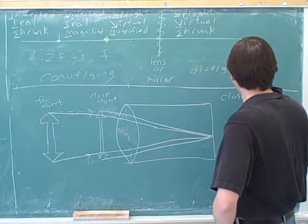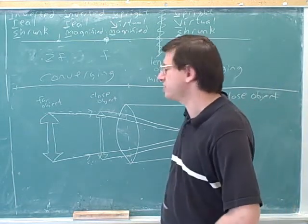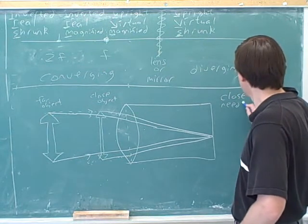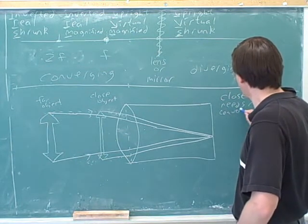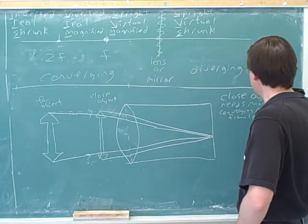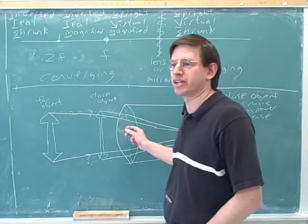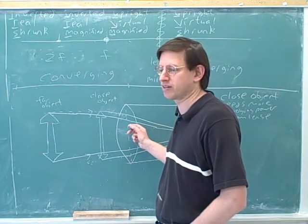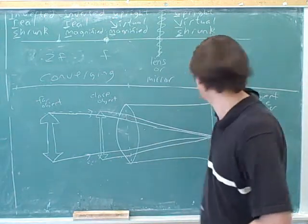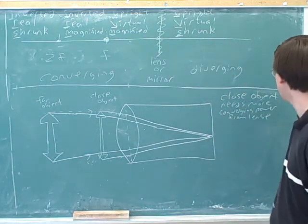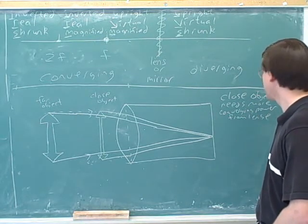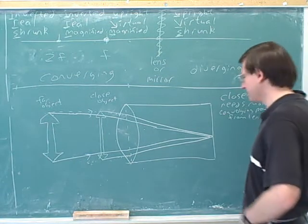So, do we decide that a close object needs more converging power from the lens or less converging power? More. We should just know that the lens of the eye is a converging lens. We've always drawn it like a convex converging lens. So the lens of the eye is a converging lens, but it can be more converging or less converging. So we need a more converging lens here. So a close object needs more converging power, which we need from the lens.